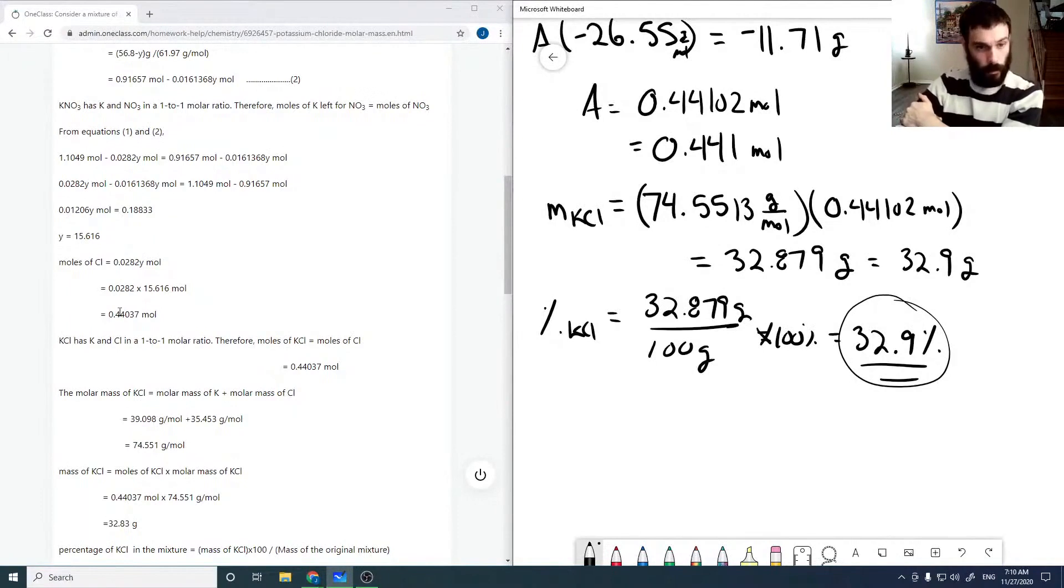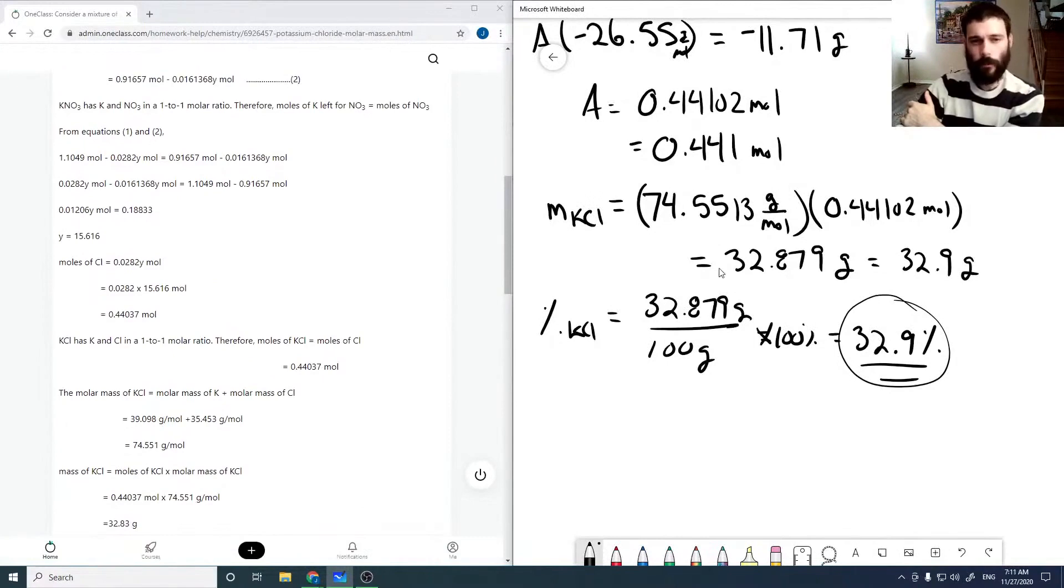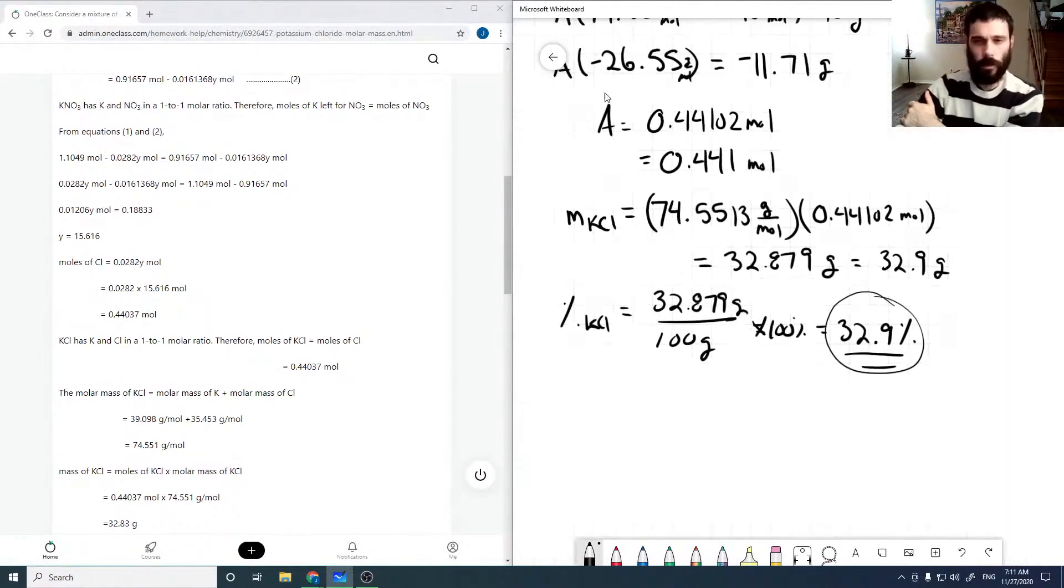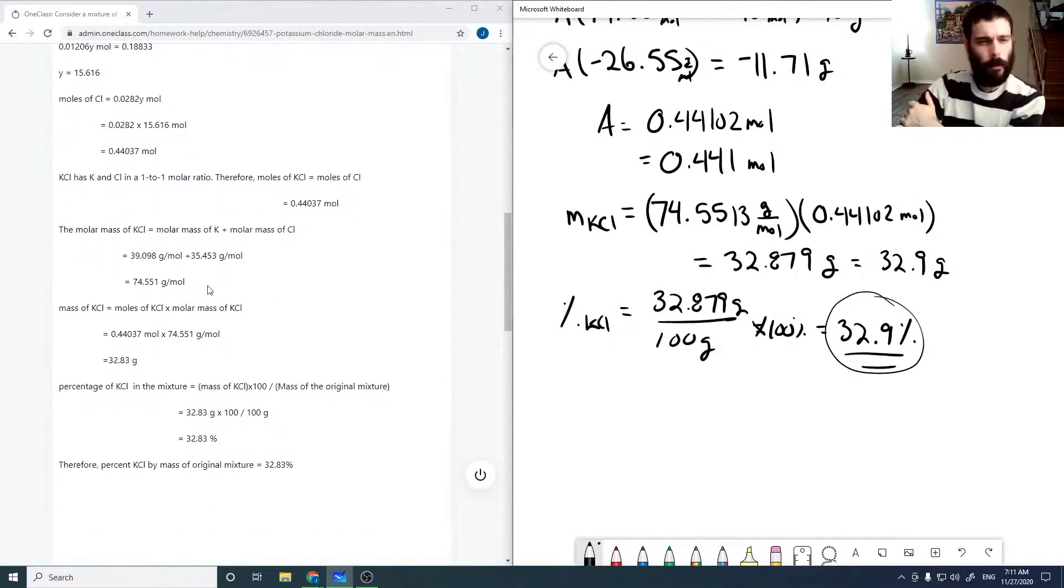So they've calculated the moles of chlorine and used that to calculate the number of moles, but it comes out to be 0.44037, so roughly the same. My guess would be just some calculator error somewhere in here, or just some rounding error. Rounding error is what I meant, probably not a calculator error.